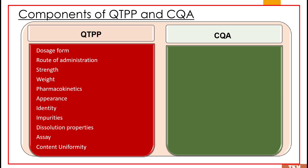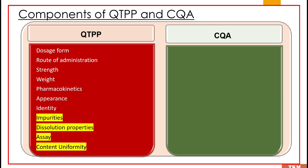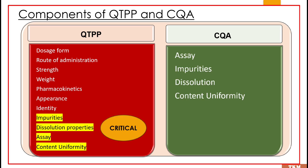Now let us look at an example — a list of QTPPs — and identify which are CQAs. Dosage form: won't change. Route of administration: will also not change. Strength: will also not change. Weight: even though it can change due to raw material or excipient variation, the harm it can cause to the patient is not much. Pharmacokinetics, appearance, identity — the harm caused to the patient is not much. What do we consider as CQA? Impurities, dissolution properties, assay, content uniformity — variations in these factors can cause harm to the patient, so they come under critical factors and fall under the CQA category.